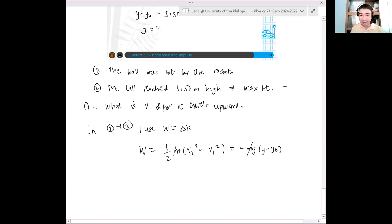So of course, the masses will cancel. The final velocity is the velocity at the top. Therefore, v2 there should be zero. So zero na ito. And hence,